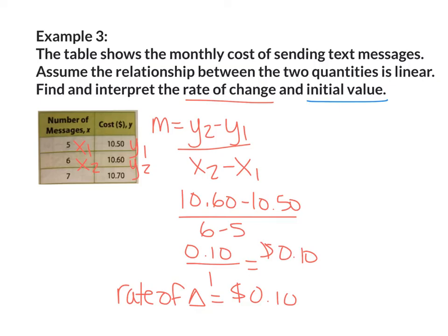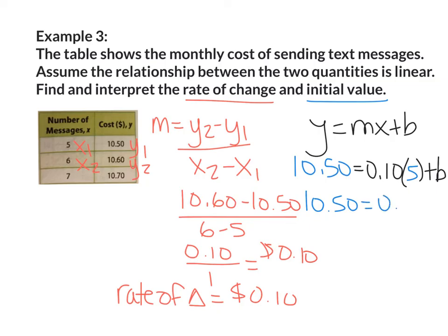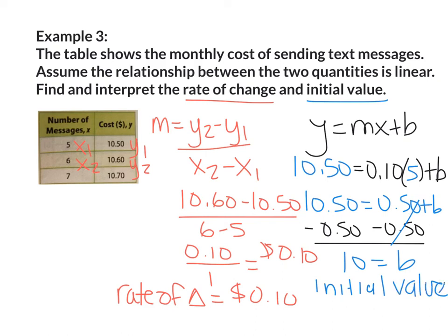Now we need to find the y-intercept. So I need the equation y equals mx plus b. I'm going to use the first set of points. So my y value is going to be $10.50. My slope is 10 cents. I'm going to multiply by my x value, which is 5. I'm going to bring down $10.50. 10 cents times 5 will give me 50 cents plus b. I'm going to subtract 50 cents from both sides. 10.50 minus 50 cents will give me 10. 50 cents minus 50 cents will cancel out. So I'll be left with b. So my initial value is going to be $10.00.